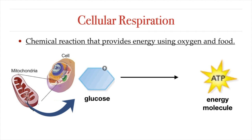From each glucose molecule, a cell can theoretically produce up to 38 ATP molecules. Unlike the energy found in the bonds of glucose, the energy found in the bonds of ATP can be easily used by cells for whatever processes require energy. For example, the cell might use ATP energy to complete a chemical reaction, or to transport a nutrient, or to break down a waste product, or to move a muscle. Basically, any process that requires energy in the cell uses energy in the form of ATP.